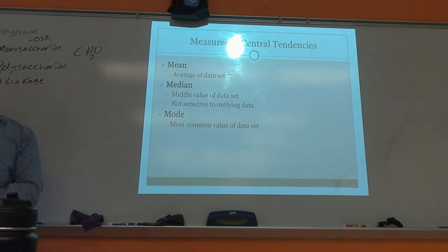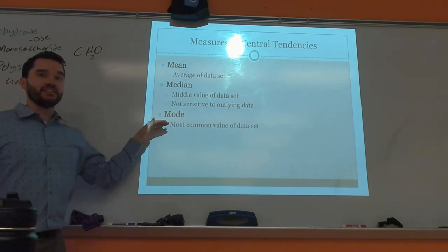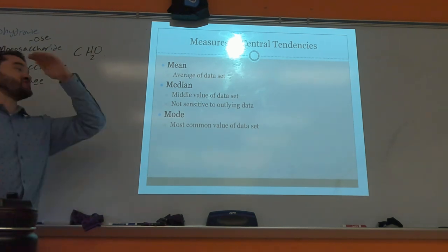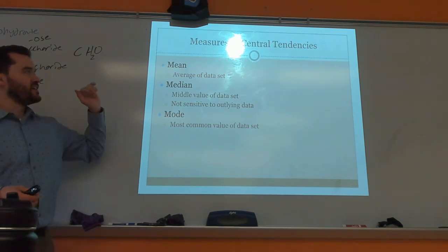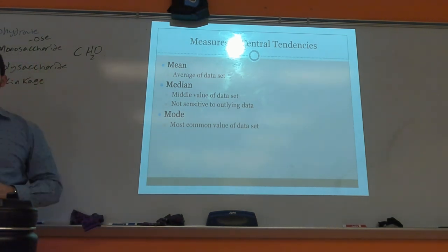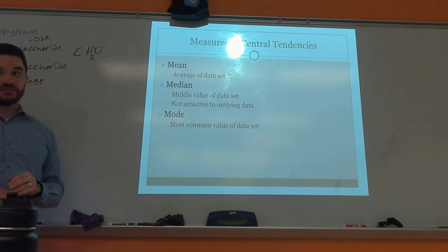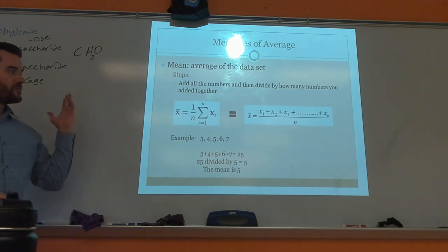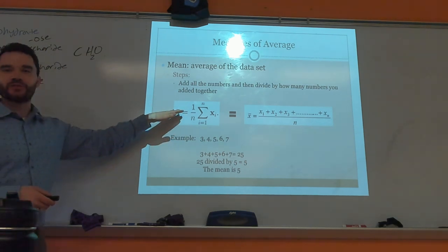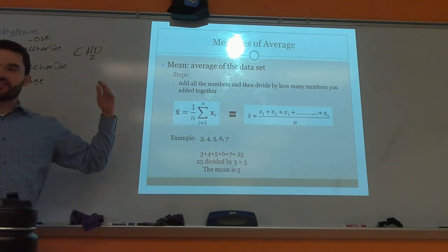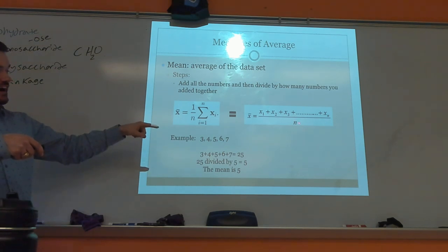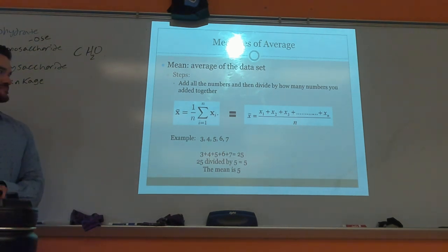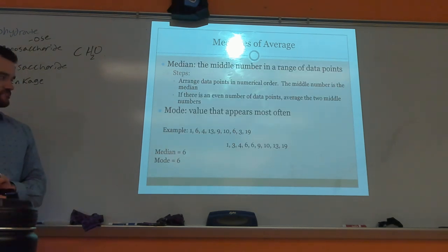Mode is the most common value in a data set. You might have a bunch of test scores where the average is 75, but an 80 was the most commonly scored — meaning the mean and the mode are not always the same. To calculate the average, you take everybody's score, add them all up, and divide by the number of scores.